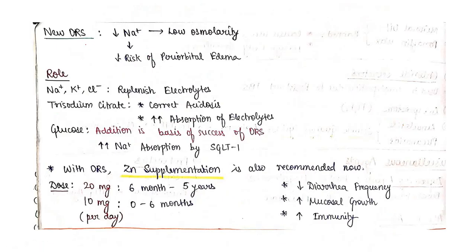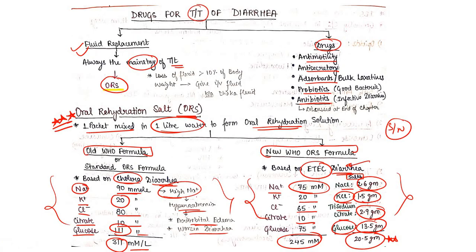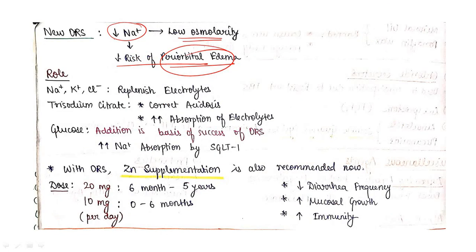Moving to the next part: in new ORS, sodium amount is decreased, so there will be low osmolality and decreased risk of periorbital edema. In old ORS, high sodium means high risk of periorbital edema, but in new ORS, sodium amount is less, so there will be less risk.